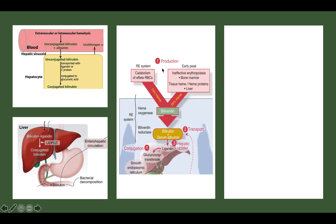To recap: bilirubin comes from hemoglobin — via catabolism of senescent or dead red blood cells every 120 days from the reticuloendothelial system, ineffective erythropoiesis due to bone marrow suppression, or liver Kupffer cells. About 75% of heme causing bilirubin formation comes directly from red blood cells. The pathway goes: heme → biliverdin → bilirubin → serum albumin complex → liver (ligandine replaces albumin) → glucuronosyltransferase performs conjugation.